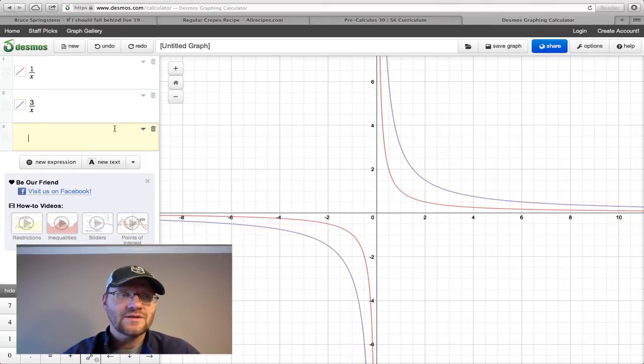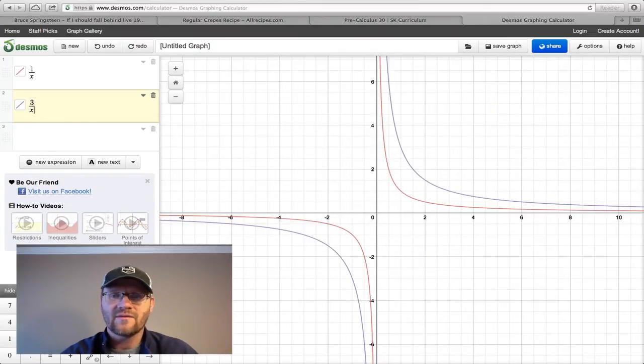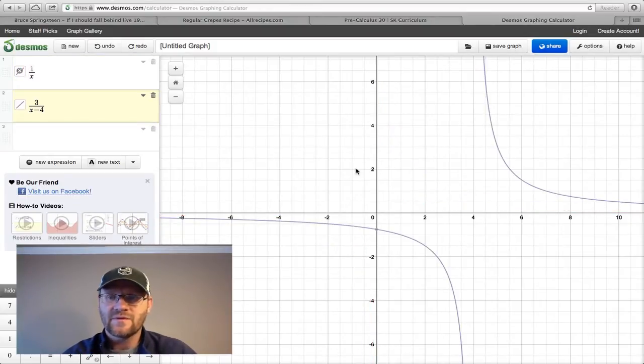If I change the denominator so it is now x minus 4, notice how the whole graph shifts to the right. So again, 3 over x looks like that. That's our blue graph. And 3 over x minus 4 shifts to the right four units. So now our vertical asymptote is now at x equals 4, and our horizontal asymptote is still the same. It's at y equals 0.